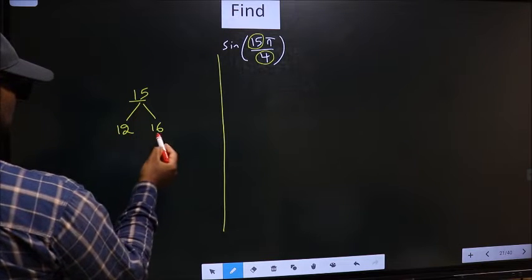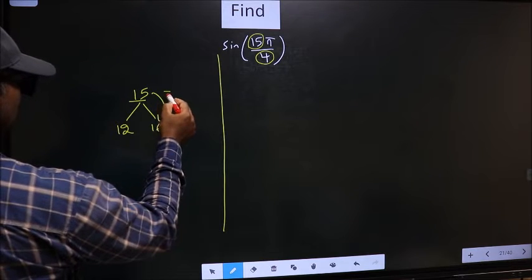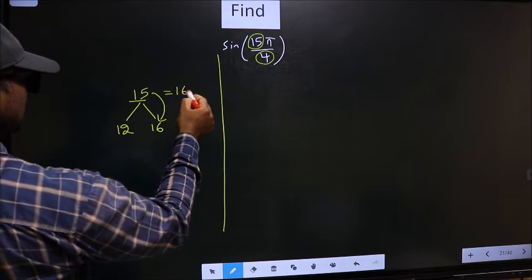15 is close to which multiple? This is close to 16. So now 15 should be written as 16 minus 1.